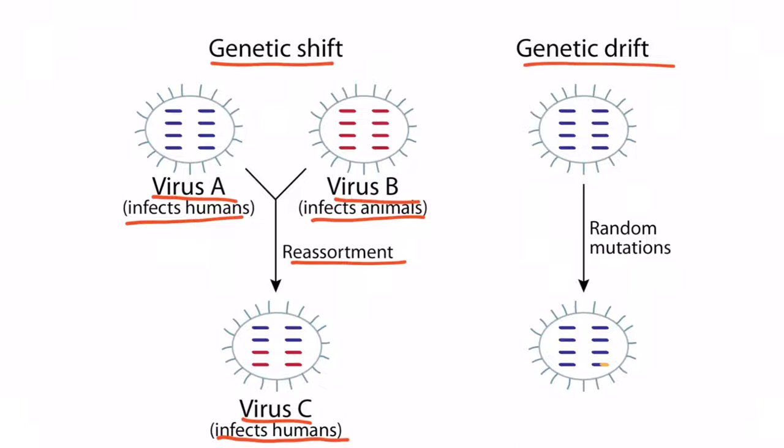Genetic drift is a much more benign process compared to genetic shift. It occurs as a result of gradual random mutations — only one little segment of one RNA strand is changed. The virus has only slightly altered its genome, so the hemagglutinin or neuraminidase elements may only be slightly different. This confers some resistance to the novel virus, allowing it to infect a lot of people in a community, but it won't cause a worldwide pandemic. Therefore, genetic drift can cause epidemics in communities, but is not nearly as lethal as genetic shift.